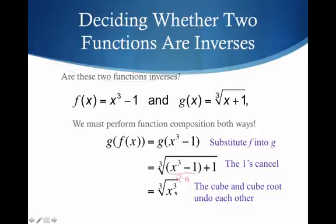And notice we have X cubed minus 1 plus 1. And so the 1s do indeed cancel, leaving me just with the cube root of X cubed. And the cube and the cube root, they undo each other. And so we just end up with X. So again, I compose G and F, and I get an X. Can we say emphatically right now that these are inverses? Well, no.